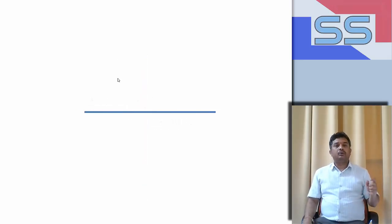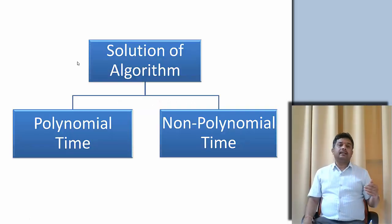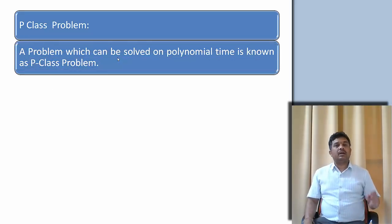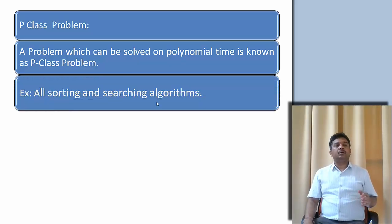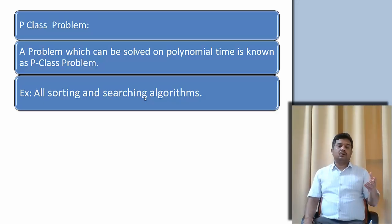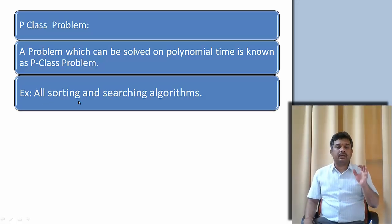Basically, any problem given to find a solution — we write an algorithm, and the algorithm can be solved either in polynomial time or in non-polynomial time, which we already know. P class problems are those problems which can be solved in polynomial time. For example, sorting and searching algorithms are polynomial time. If you take linear search, the complexity is O(n), and binary search is O(log n). Similarly, sorting can also be done in polynomial time.